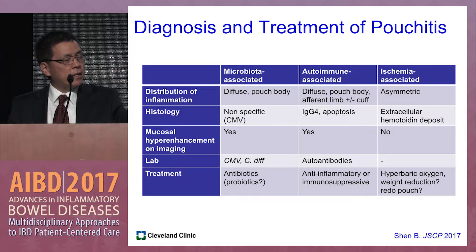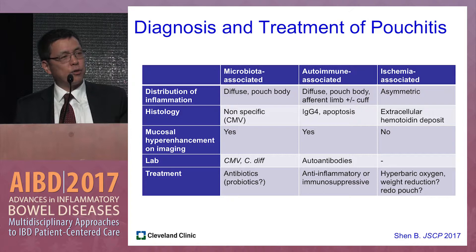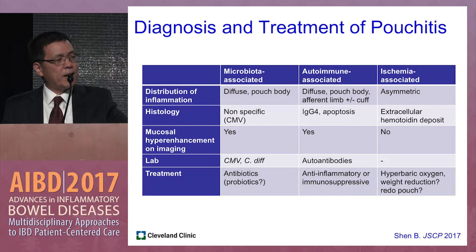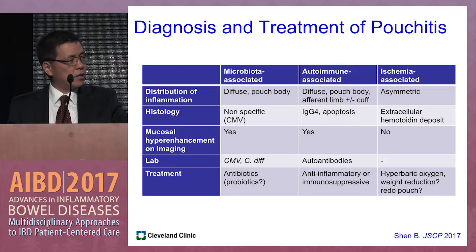In summary, refractory pouchitis is classified as microbiota-associated, autoimmune-associated, or ischemia-associated, and differential diagnosis is based on distribution, histology, mucosal hyperenhancement, and lab tests. Treatment differs accordingly: microbiota-associated pouchitis is treated with antibiotics or probiotics; autoimmune-associated with immunomodulatory therapy, biologics, or steroids; and ischemia-associated pouchitis with hyperbaric oxygen therapy.